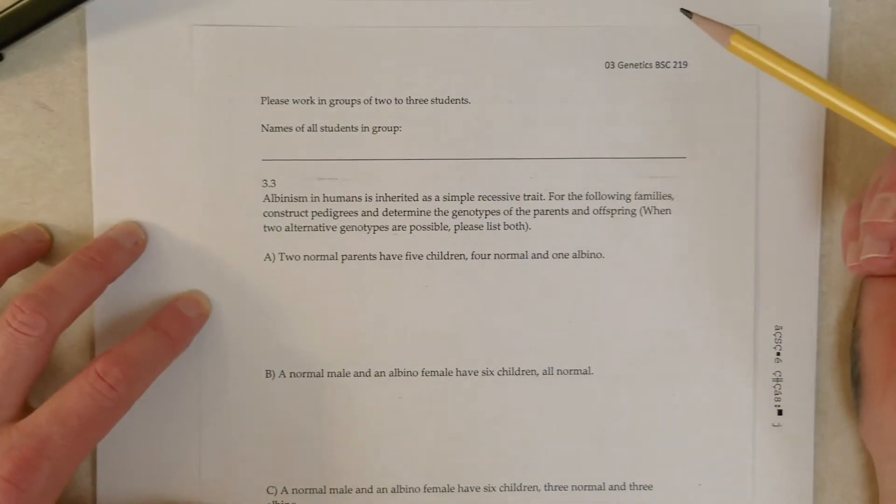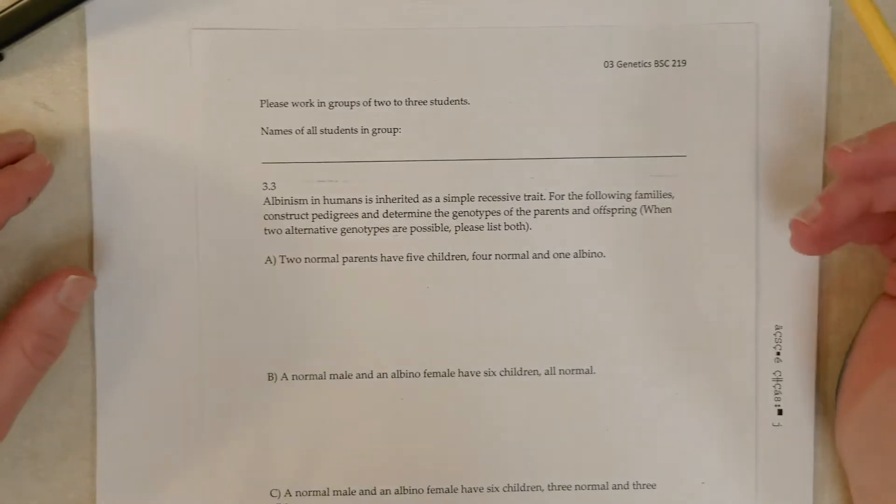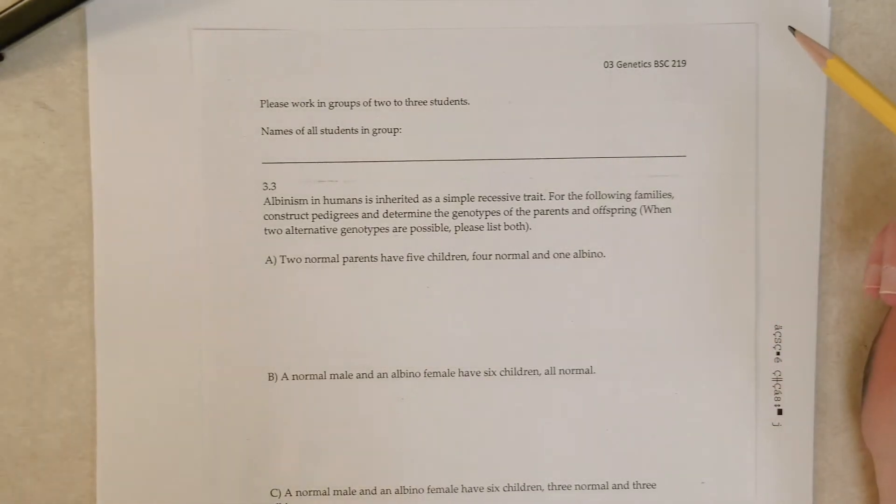I just want to briefly go over pedigrees or family trees - they mean the same thing. These are tools we often use to study human genetics because unlike with peas or fungi or other model organisms where you can get hundreds or thousands of offspring from a genetic cross, when two humans mate you get maybe one or a couple offspring at a time.